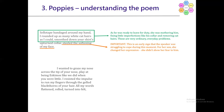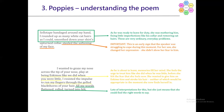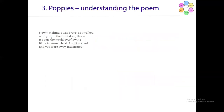I wanted to graze my nose against the tip of your nose, play at being Eskimos like we did when you were little. I resisted the impulse to run my fingers through the gel black thorns of your hair. All my words flattened, rolled, turned into felt. As he's about to leave, memories fill her mind — she feels the urge to treat him like she did when he was little, before she felt this fear. She wanted to give him an Eskimo kiss and stroke his hair, but neither would be appropriate. Essentially, she couldn't find the right words to say.